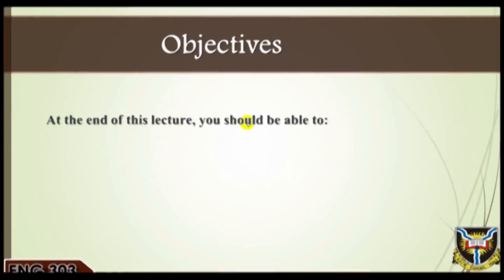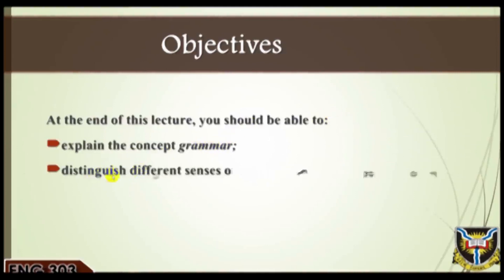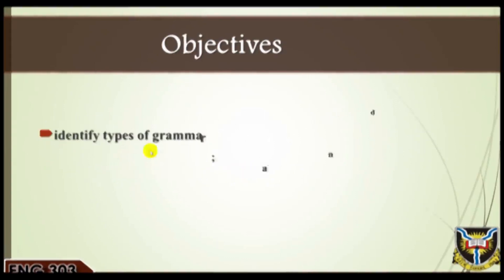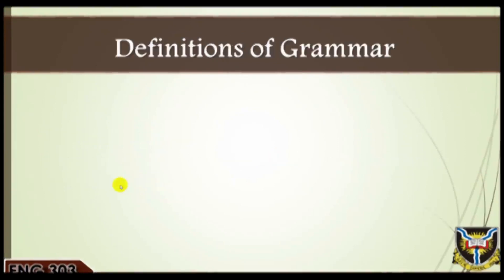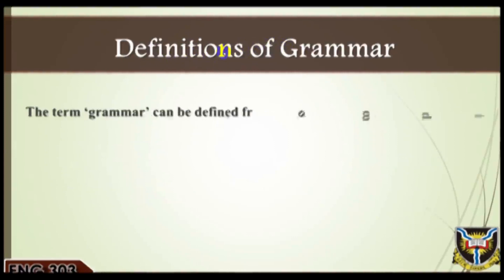Objectives: At the end of this lecture you should be able to: one, explain the concept of grammar; two, distinguish different senses of grammar; three, identify types of grammar; and four, associate different grammars with specific grammatical orientations. Pre-test: one, what is grammar? Two, what types of grammar do you know? Three, what is the essence of grammar in discussions on language?